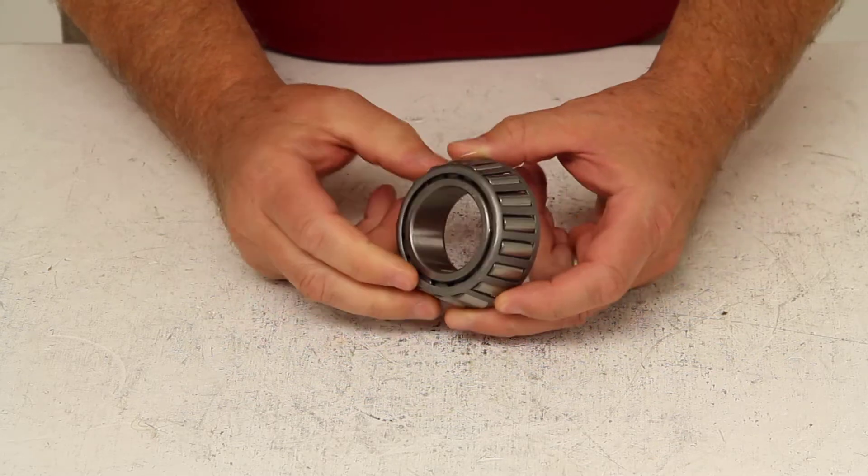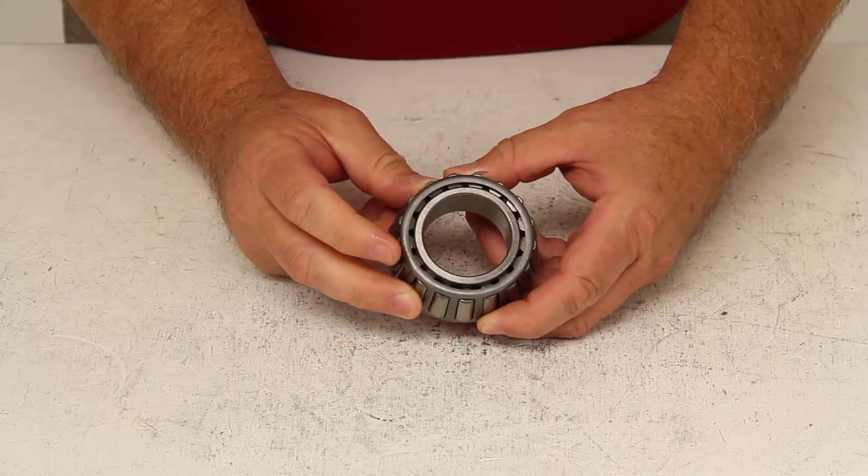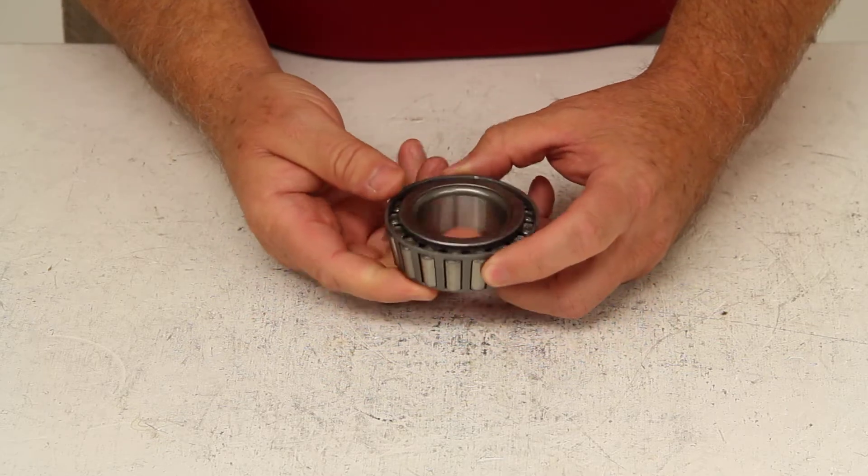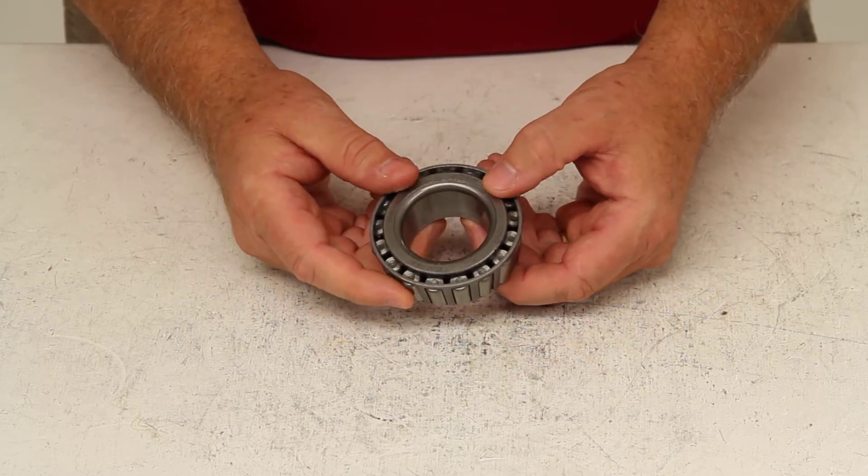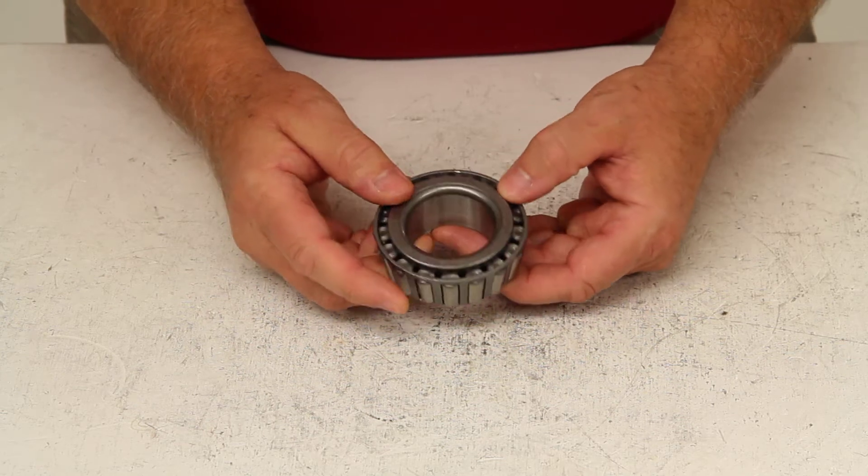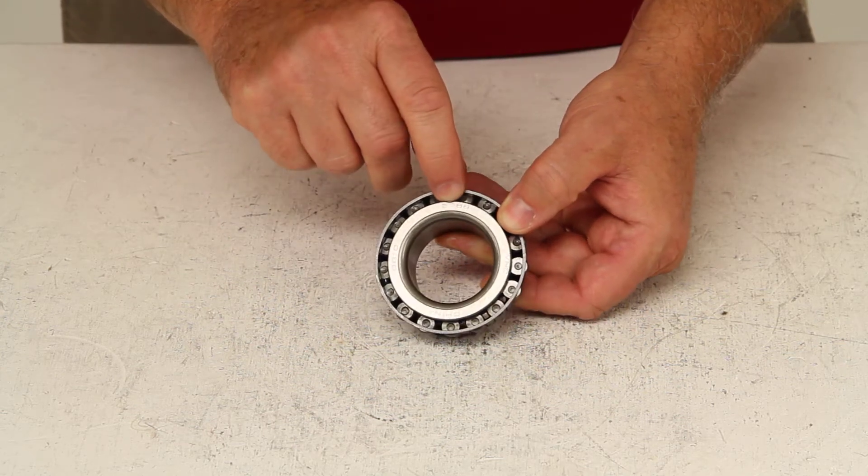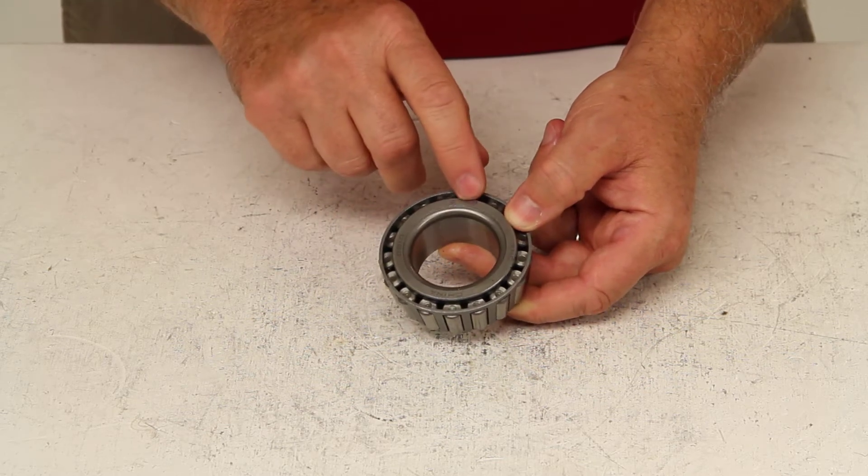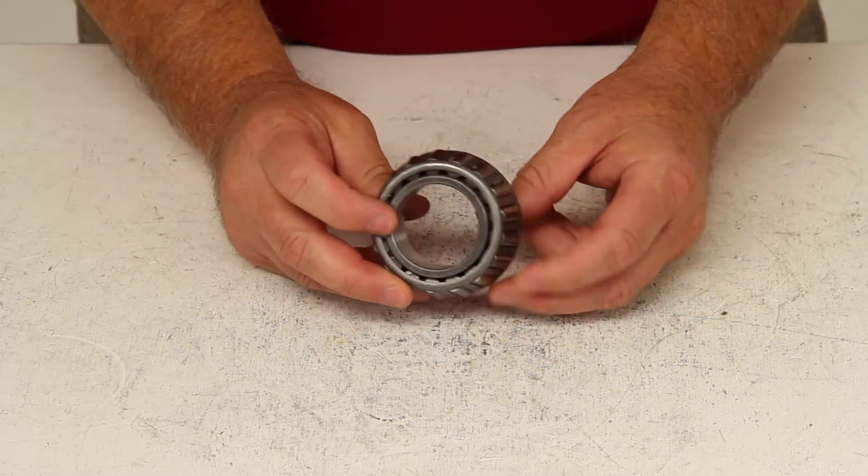These replacement bearings are high-quality tapered roller bearings designed for high-speed use. All the bearings have industry standard numbers regardless of the brand. On this one, if you look at the inner ring, etched on there is the number 2788.